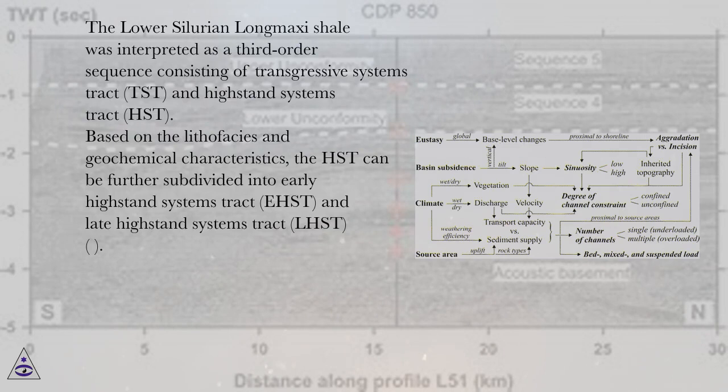The lower Silurian Long Maxi shale was interpreted as a third-order sequence consisting of transgressive systems tract (TST) and high-stand systems tract (HST). Based on the lithofacies and geochemical characteristics, the HST can be further subdivided into early high-stand systems tract (EHST) and late high-stand systems tract (LHST).